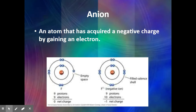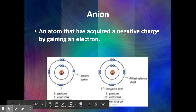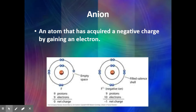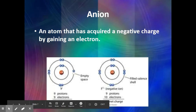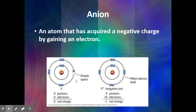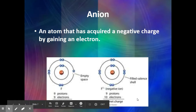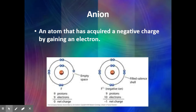If a neutral atom loses a negative charge (electron), it will have an overall positive charge. If a negative charge is added to a neutral atom, it gives an overall negative charge. For example, fluorine is in group 17 and has 7 valence electrons. It wants to gain one electron to have 8, giving it a net charge of negative 1. Any ion with a negative charge is called an anion.